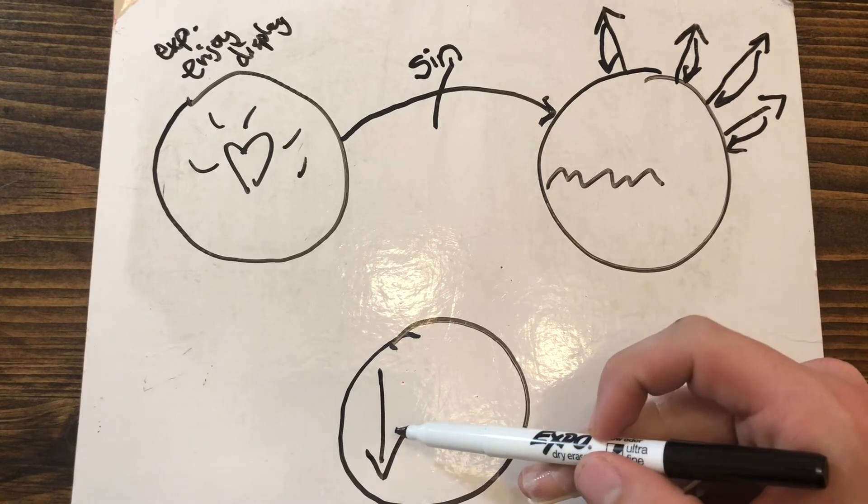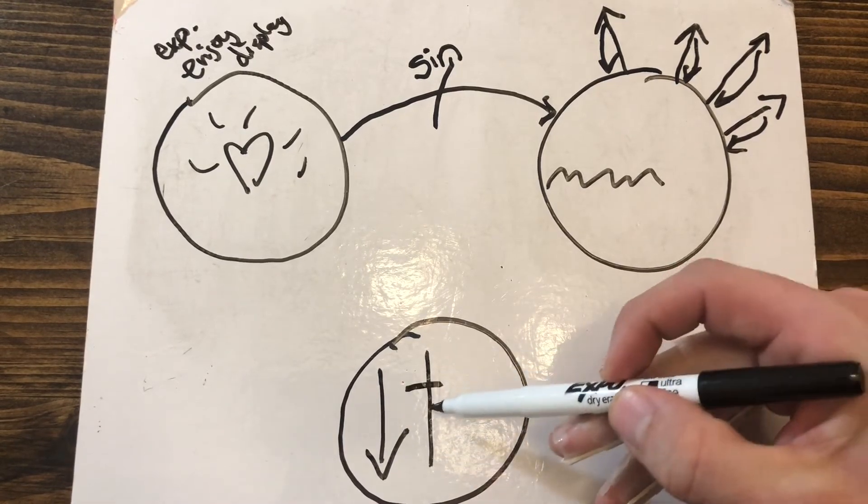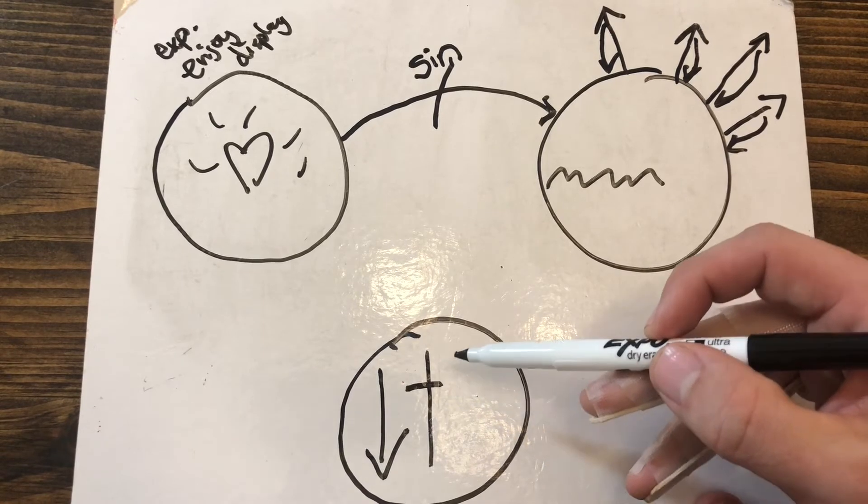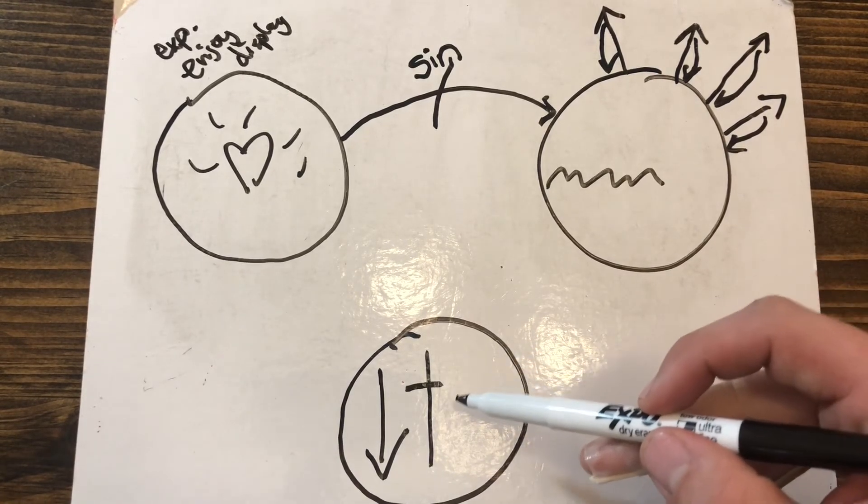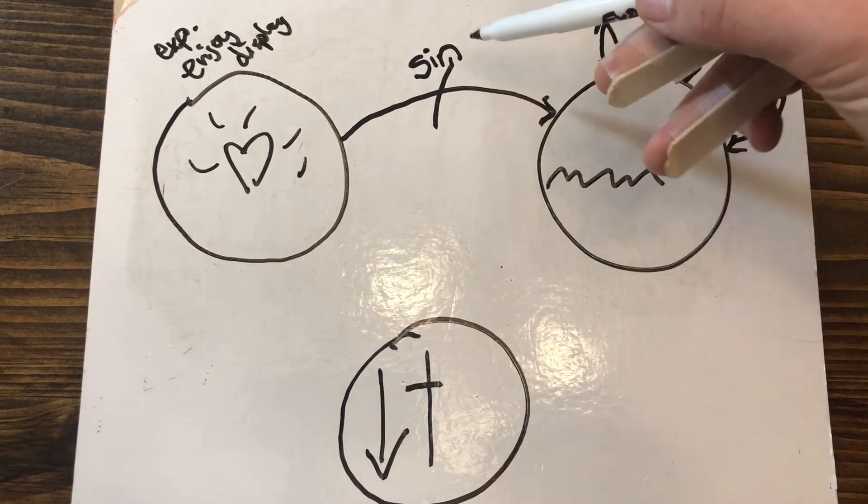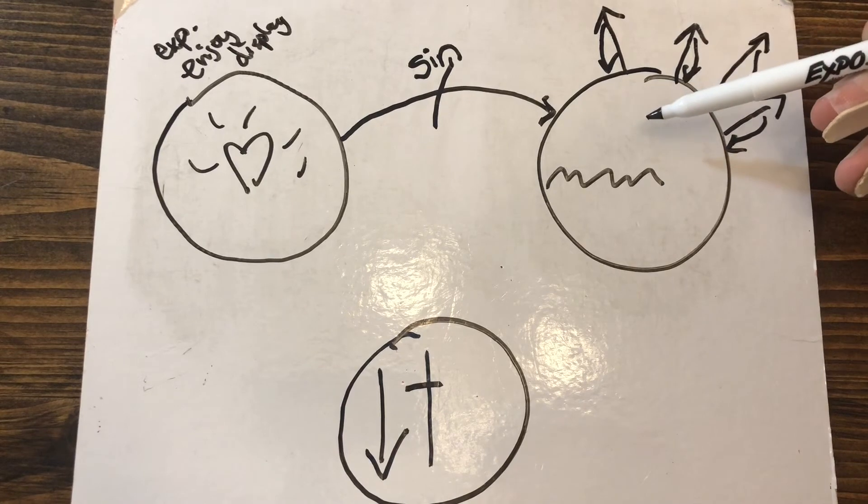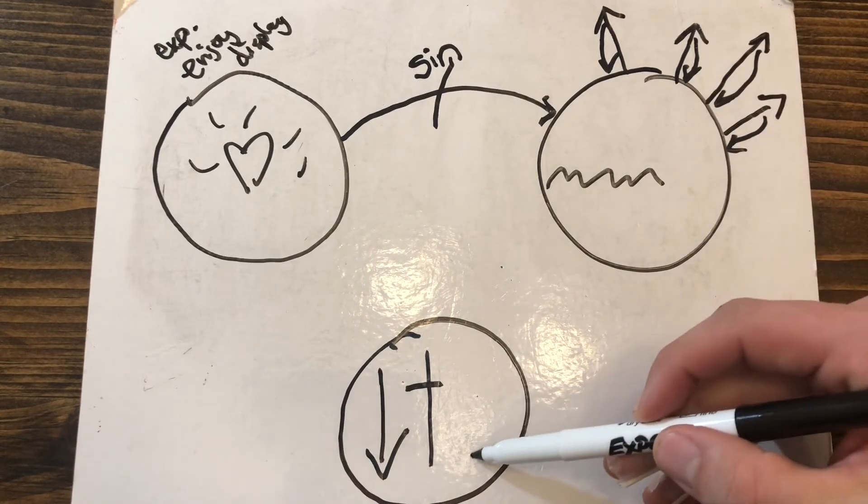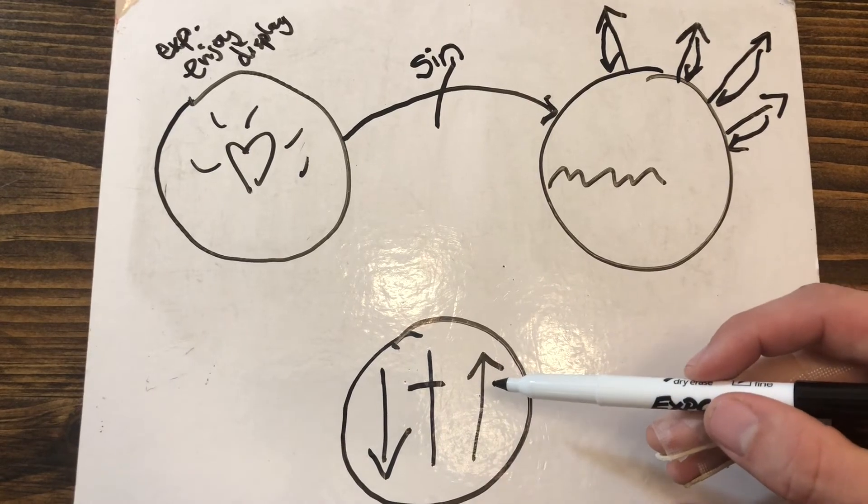And he lived that perfect life that we were supposed to live and then he died the death that we were supposed to die. Even though he was perfect and spotless and without sin, he died in our place to pay the penalty of this sin, to keep us from having to stay in the separation from him. And then the scripture says that three days later he was raised from the dead, conquering sin and conquering death in the grave.